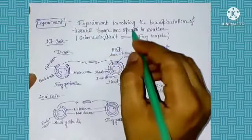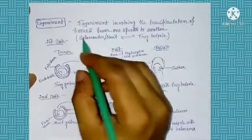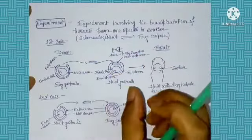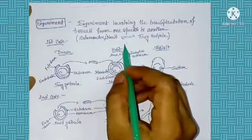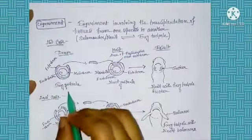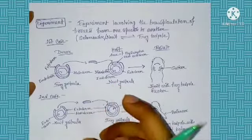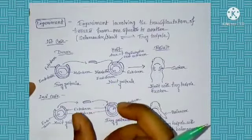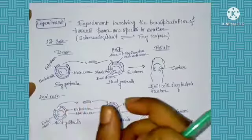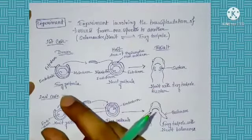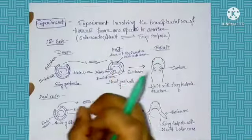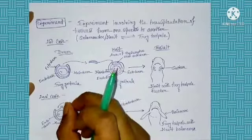Through this experiment we understand the genetic specificity of induction in a better way. The experiment involves the transplantation of tissue from one species to another. In this experiment two species are involved: one is the salamander or the newt, and another is the frog. The scientists took two gastrulas — one from the frog and another from the newt. The gastrula is the developmental stage of the embryo in which the movement of embryonic cells takes place.